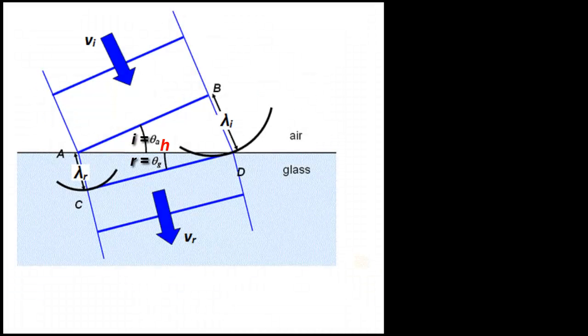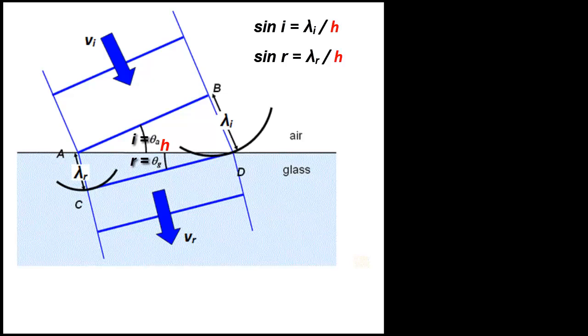Now, using some basic trigonometry, we see that the sine of angle I is opposite, which is lambda I over hypotenuse, the red H. Similarly, the sine of angle R will be lambda R over H.